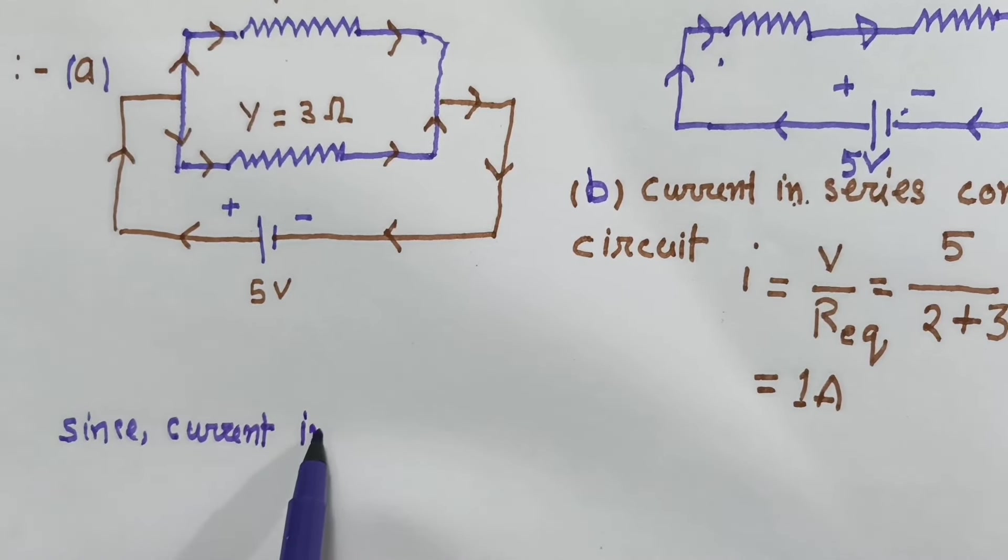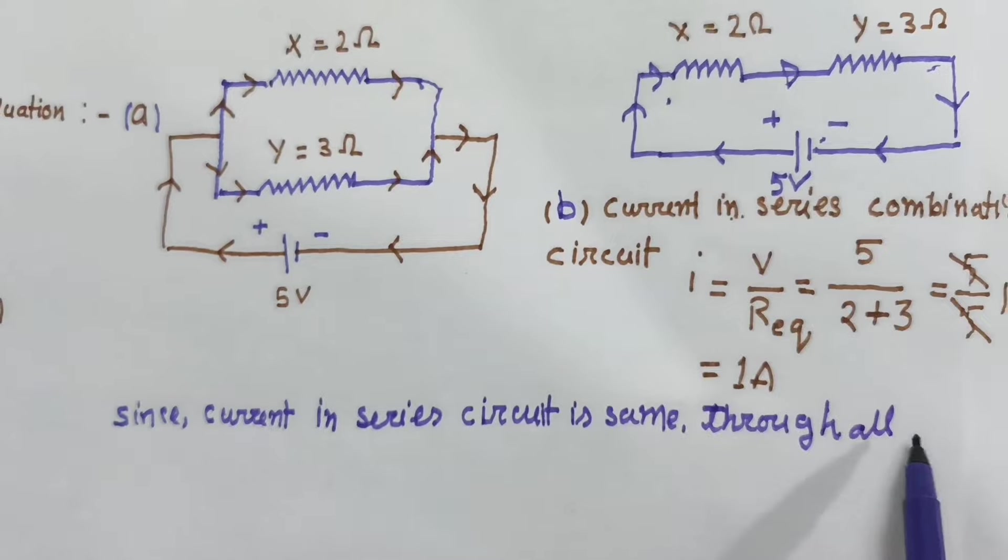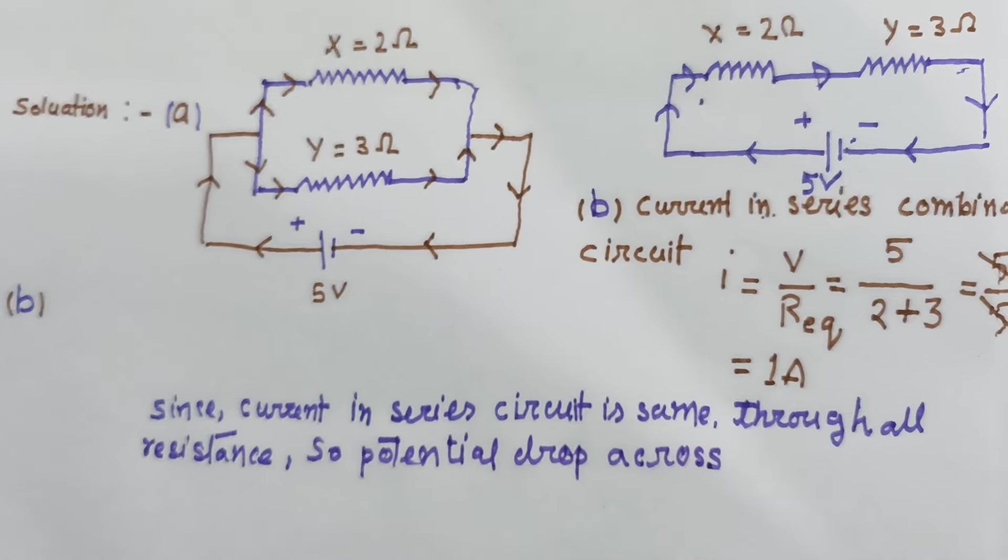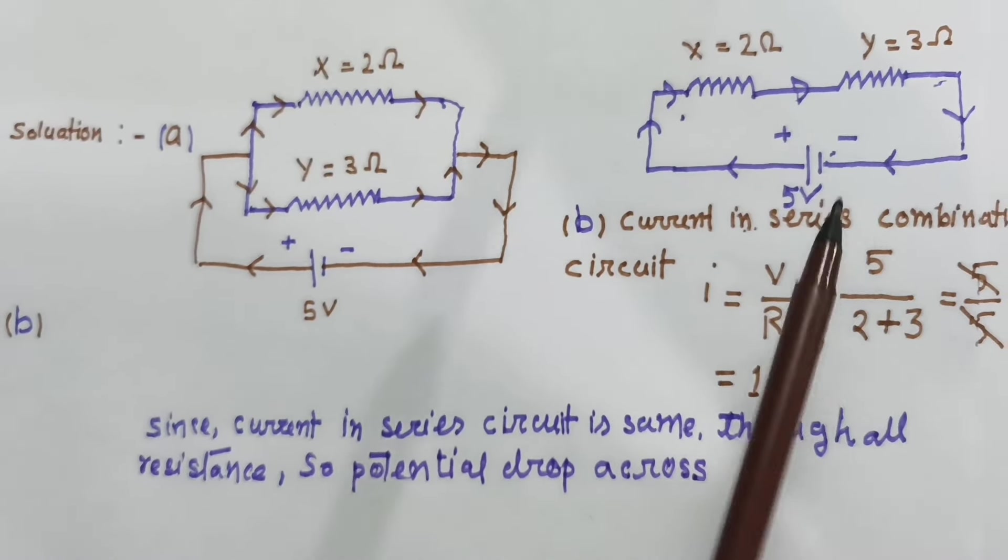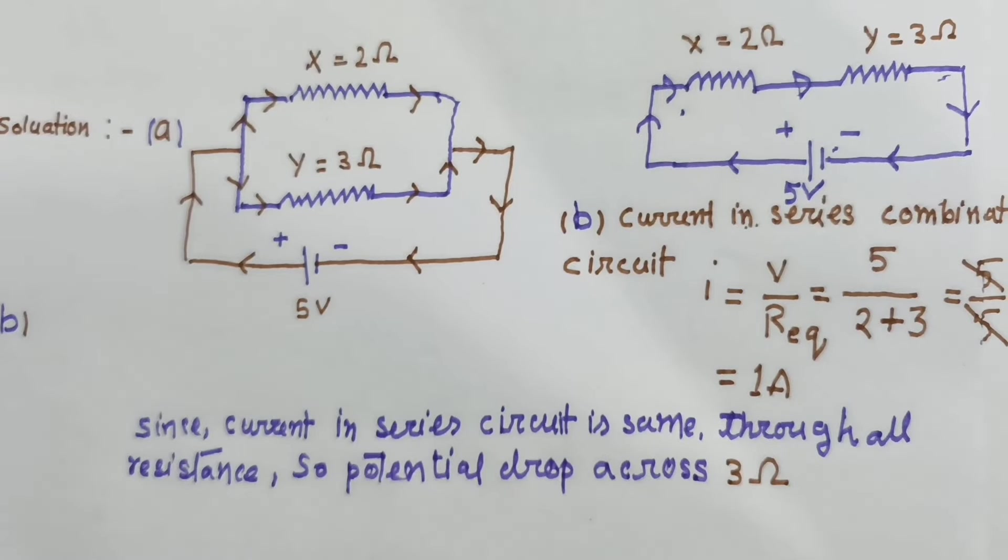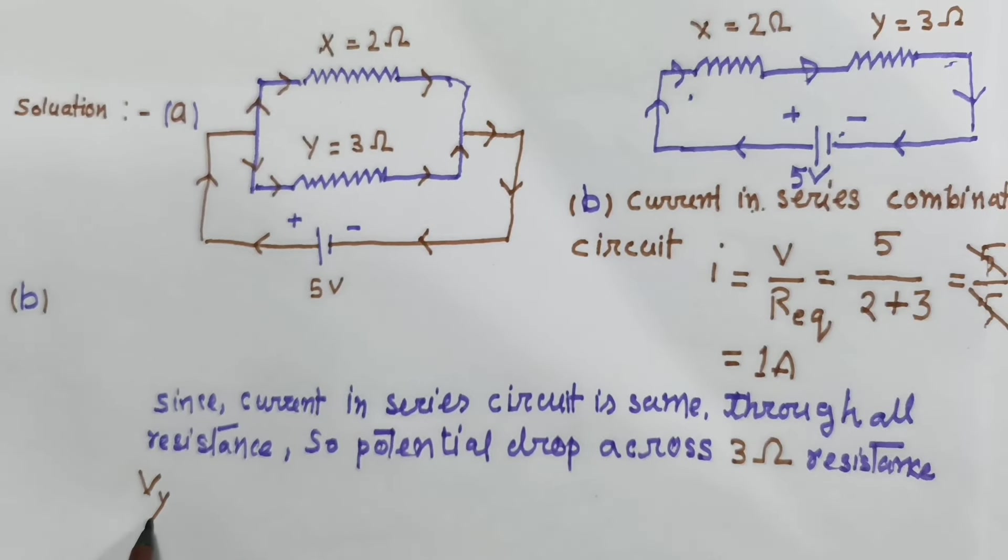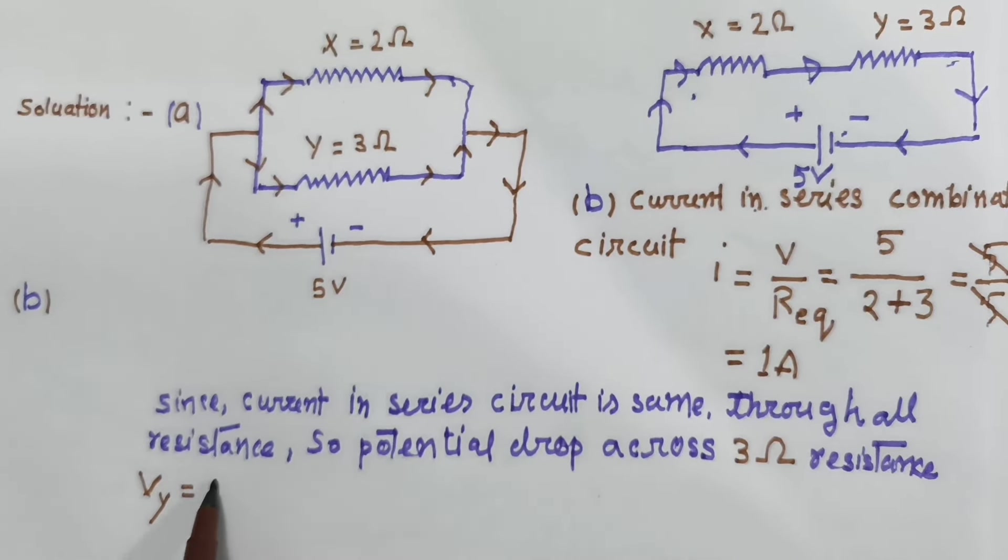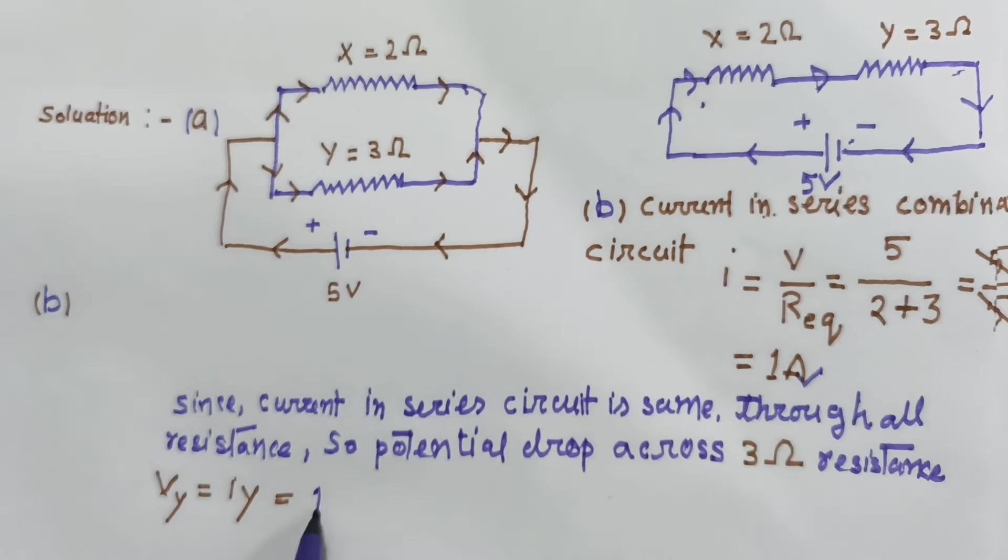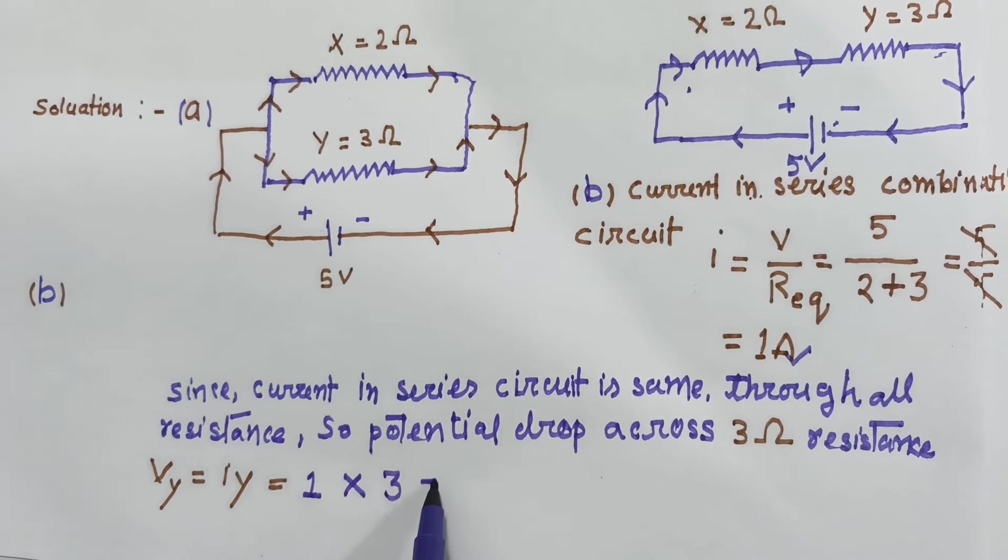Since current in series circuit is same through all resistances, the potential drop across 3 ohm resistance, voltage Vy equals I times y, which is 1 ampere into 3 ohms equals 3 volts.